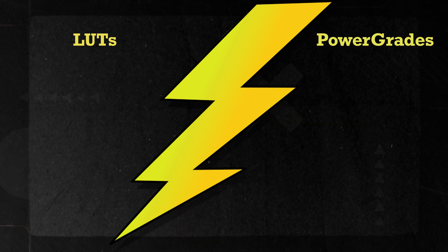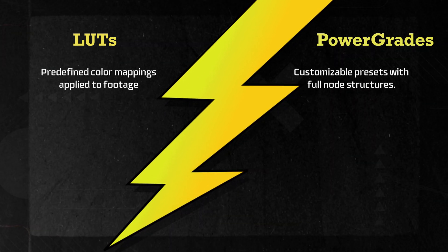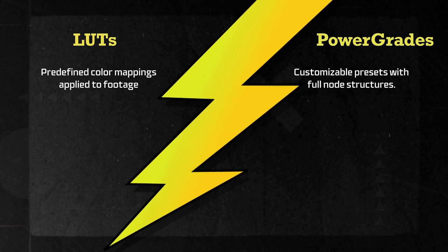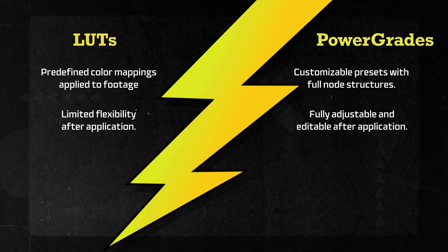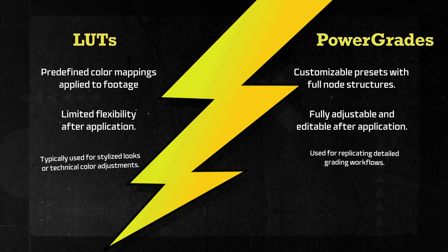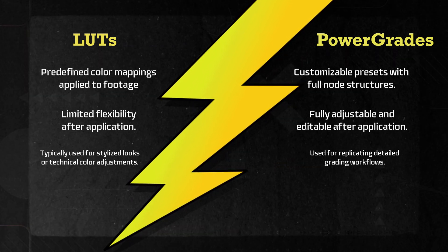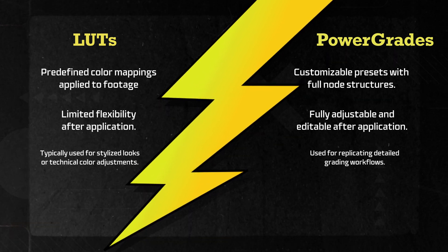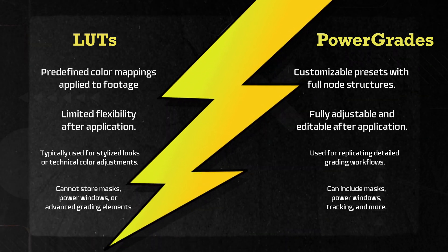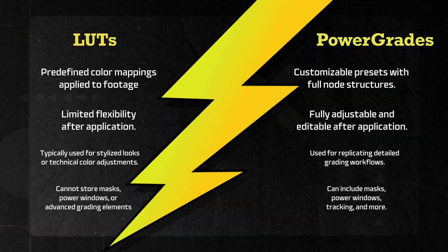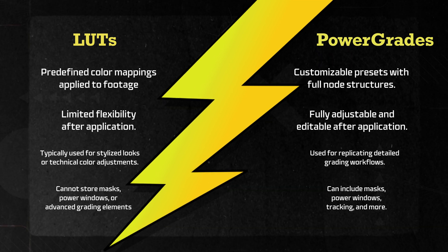Comparison with LUTs: while both Power Grades and LUTs serve similar purposes in color grading, they differ significantly. Power Grades offer more granular control over individual adjustments since they consist of node-based edits that can be modified after application. In contrast, LUTs apply a fixed transformation that cannot be easily adjusted once applied. Power Grades can encapsulate complex grading workflows involving multiple nodes, whereas LUTs are limited to simple color transformations based on hue, saturation, and luminance values.